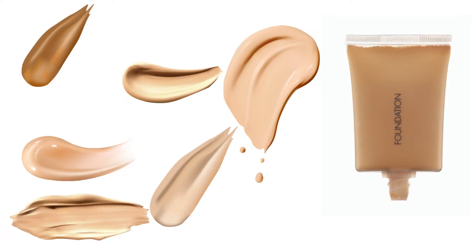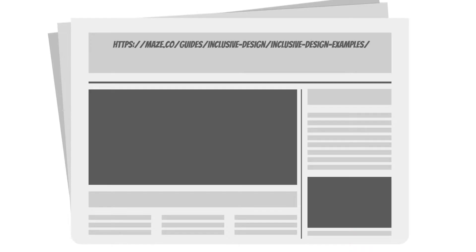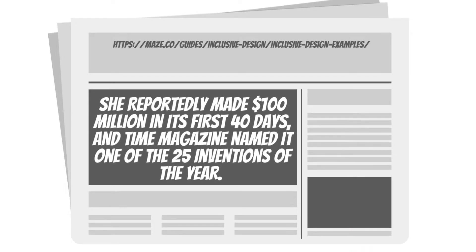Let's look at some products that perhaps don't focus on ability. Rihanna created Fenty Beauty, a brand that now offers 50 different foundation shades. She reportedly made $100 million in the first 40 days and Time Magazine named it one of the 25 inventions of the year — because the beauty brand had something for everyone. Her success was built on a strong understanding of the need for all women's skin tones to be considered.